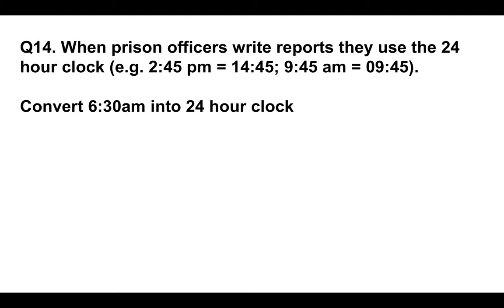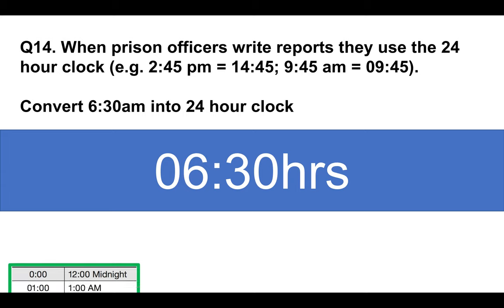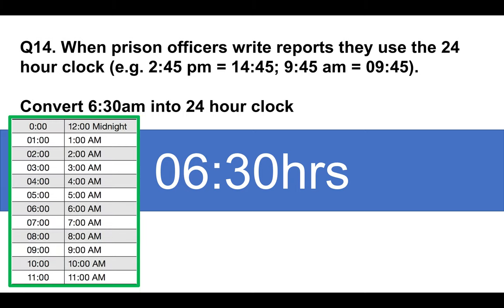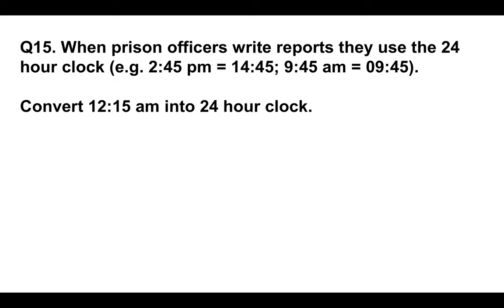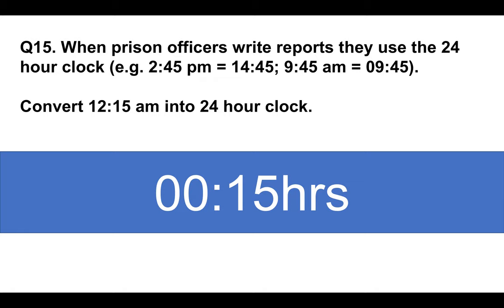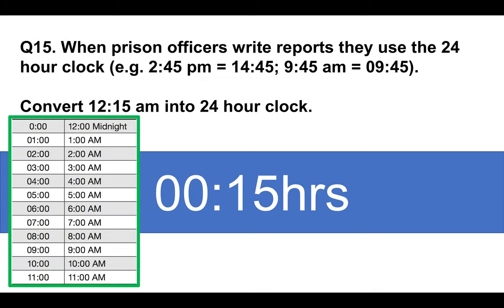Question fourteen: when prison officers write reports, they use the 24-hour clock. Convert 6:30 a.m. into the 24-hour clock. The answer is simply 0630 hours. Question fifteen: convert 12:15 a.m. into the 24-hour clock. The answer is 0015 hours — use the chart I showed you earlier and remember it starts at midnight, so 0015.